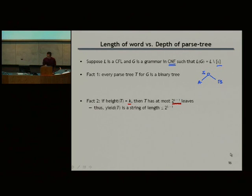Remember the yield of the tree, which is you look at what terminals you get at the bottom. All the terminals that you get at the bottom, that's the yield. That is, of course, at most the number of leaves that this tree has. So if I have a tree of height K, then it must yield a string of at most 2^K length.